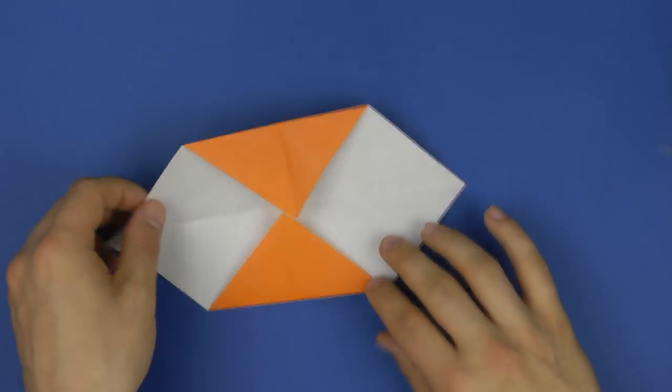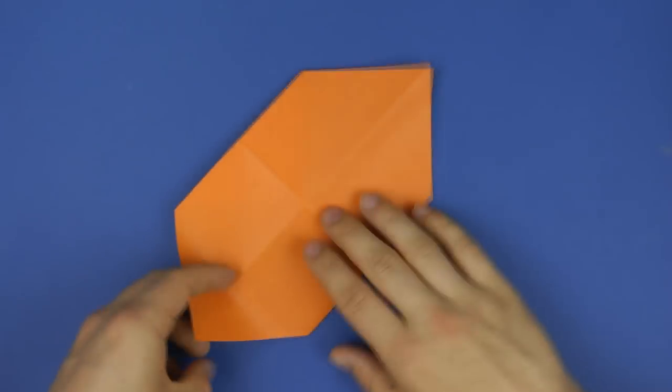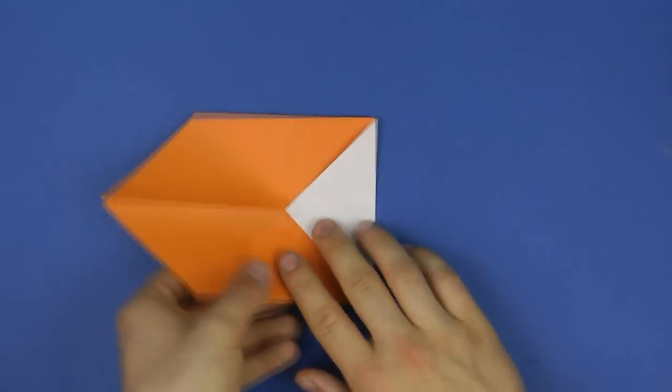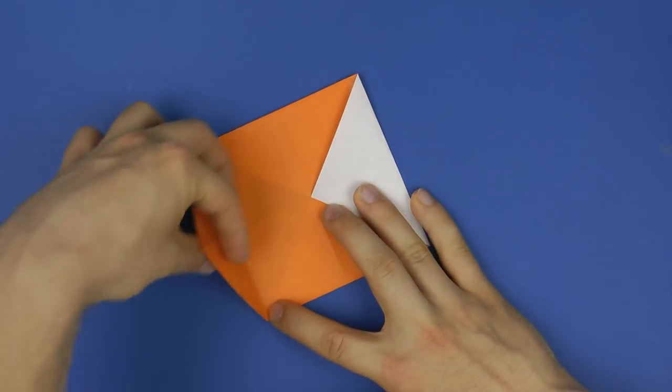So those two and then we turn it over and do the same thing with the leftover corners. So those get folded in the other direction basically.